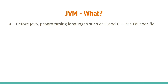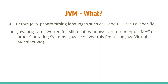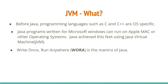Programs written before Java, in languages like C or C++, were operating-system dependent. But with the invention of Java, a Java program written on Microsoft Windows can run on macOS or Linux. This is achieved through Java Virtual Machine implementation, and this is called Write Once, Run Anywhere — the mantra of Java.